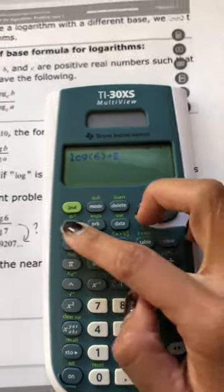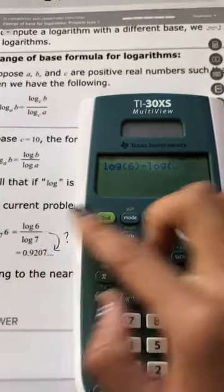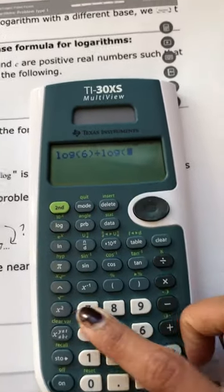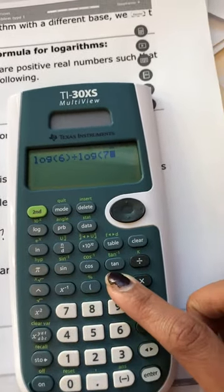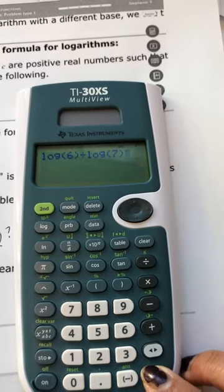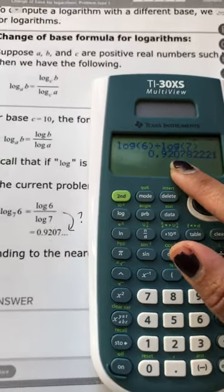And then divide it by log, and here you want log 7. So again it automatically opens up a parentheses. If you press 7 you need to close that parentheses and here you will get 0.9207.